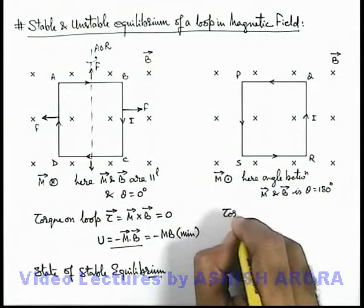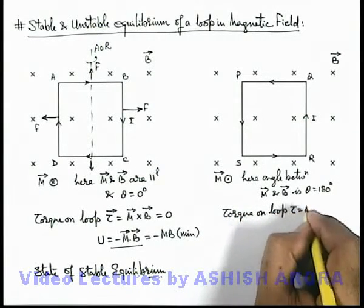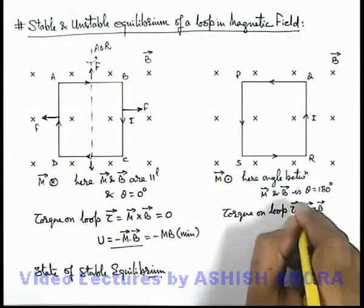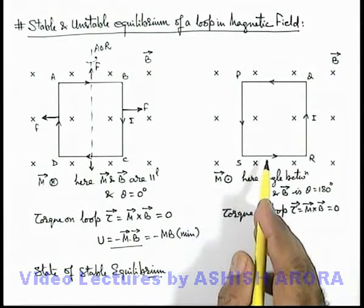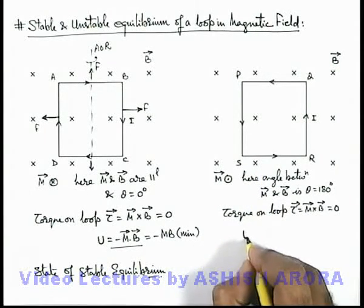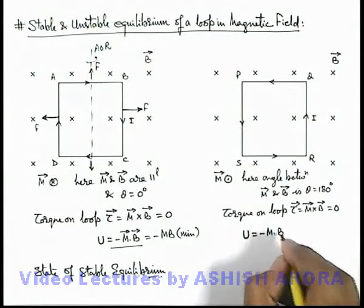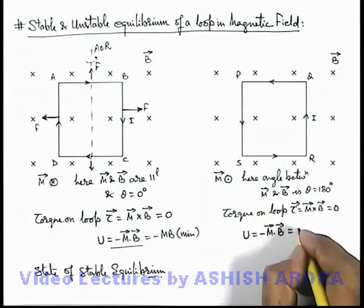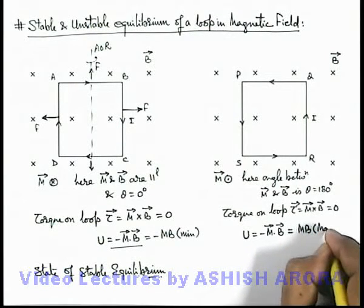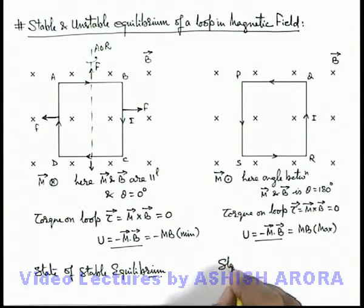Again in this situation, the torque on the loop, given as tau = m cross B, is also zero since the angle is 180 degrees — so this is also a state of equilibrium. But here if we calculate the interaction energy of the loop with the magnetic field, it will be minus m dot B, and substituting theta = 180 degrees it becomes mB, which is the maximum possible energy in this situation. So this must be the state of unstable equilibrium.